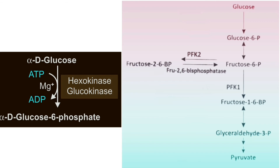Whereas phosphofructokinase-2, generally called phosphofructokinase-2/fructose-2,6-bisphosphatase, is a bifunctional enzyme because it catalyzes the conversion of fructose to fructose-2,6-bisphosphate. This fructose-2,6-bisphosphate is then hydrolyzed by the fructose-2,6-bisphosphatase activity.